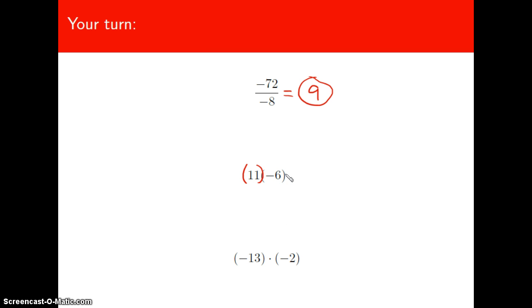But this is 11 times -6. Well, 11 times 6 is 66. But since the signs of the two factors are different, this has to be a -66. And this is multiplication as well. There's the symbol for multiplication. 13 times 2 is 26. But since it's really -13 times -2, well, I guess my result is still 26, isn't it? Because since the signs of the two factors are the same, the resulting product has to be positive as well.